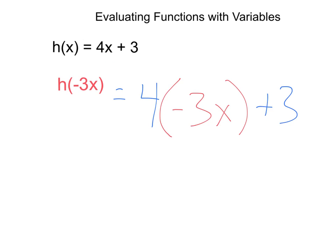plus 3. Now, if we multiply that, we'll have 4 times -3x, giving us -12x + 3. That's as far as we could simplify, and that's our answer.